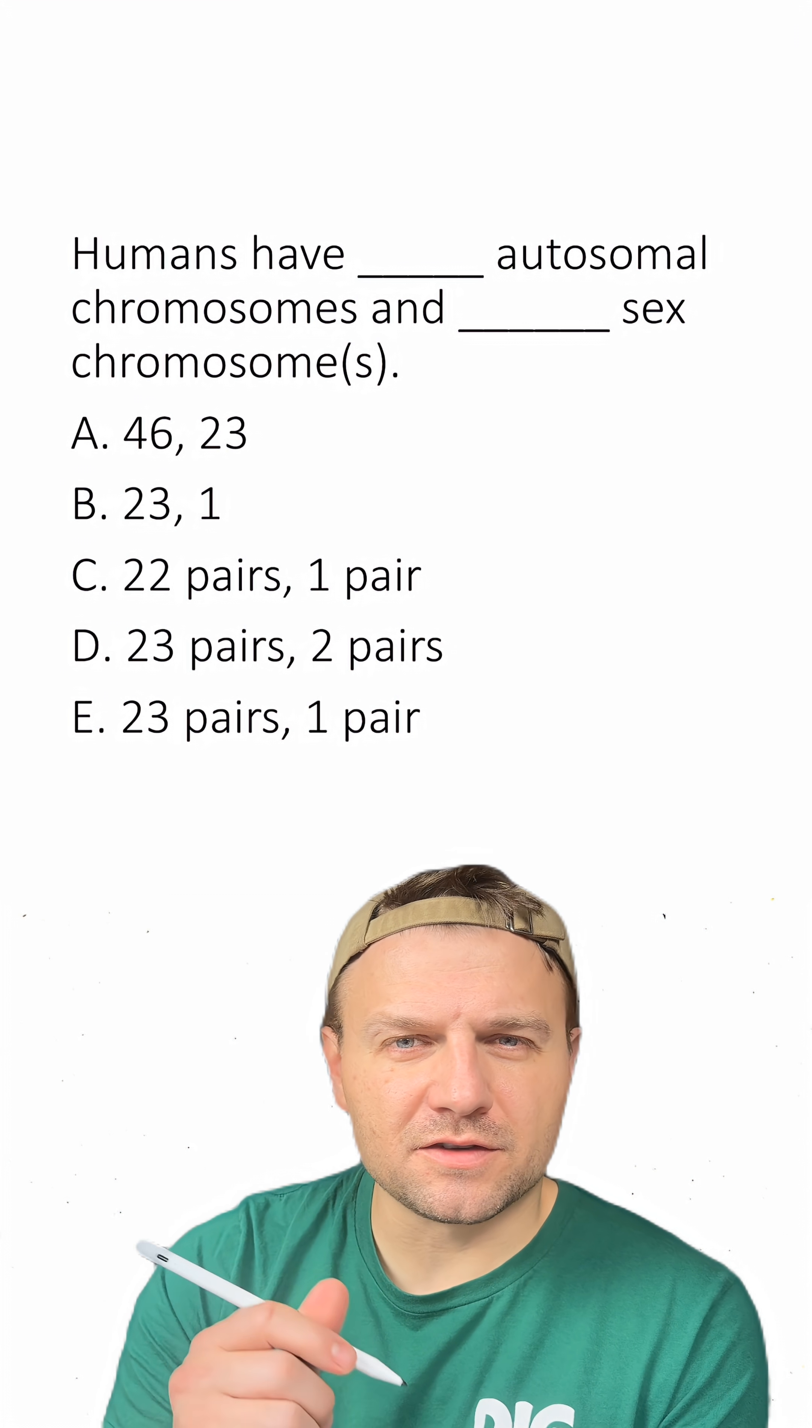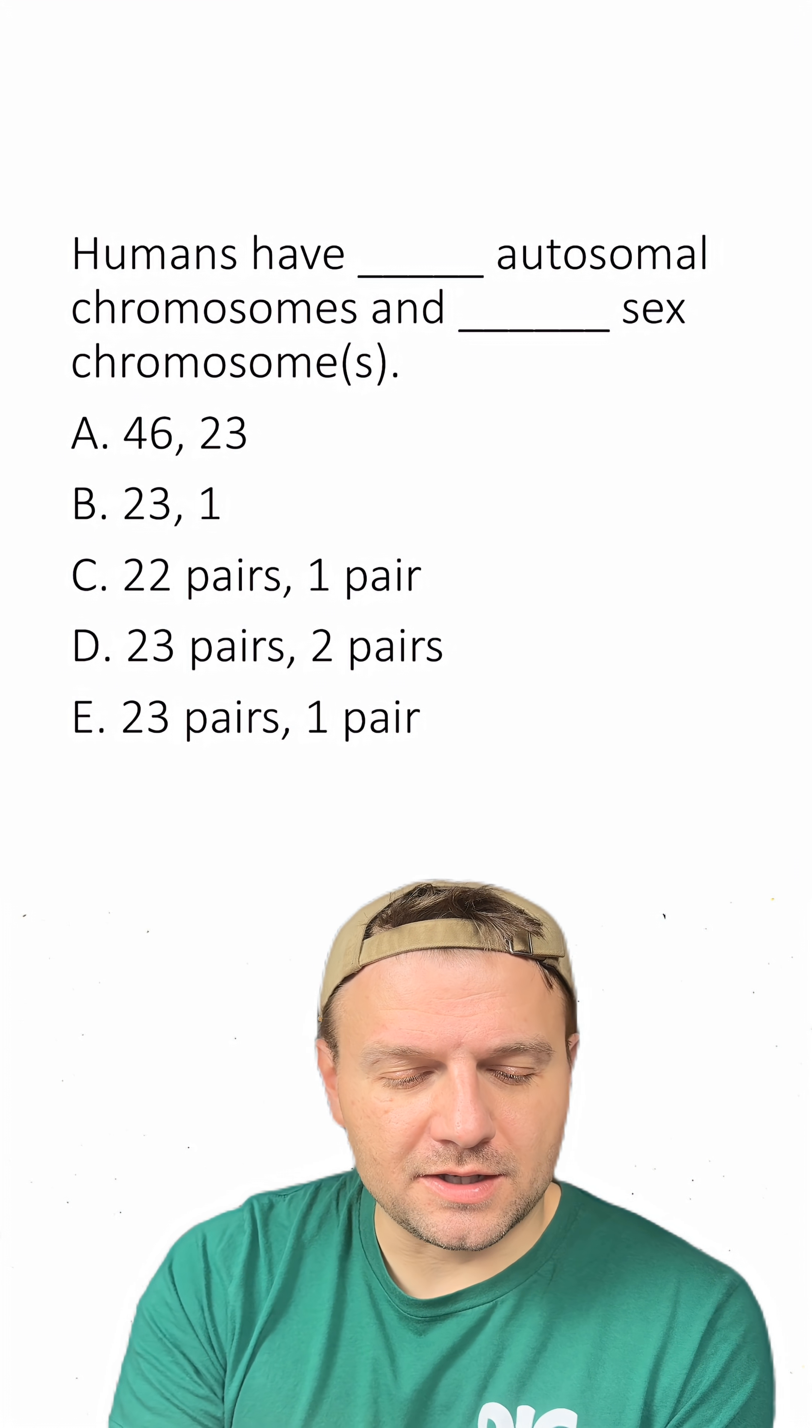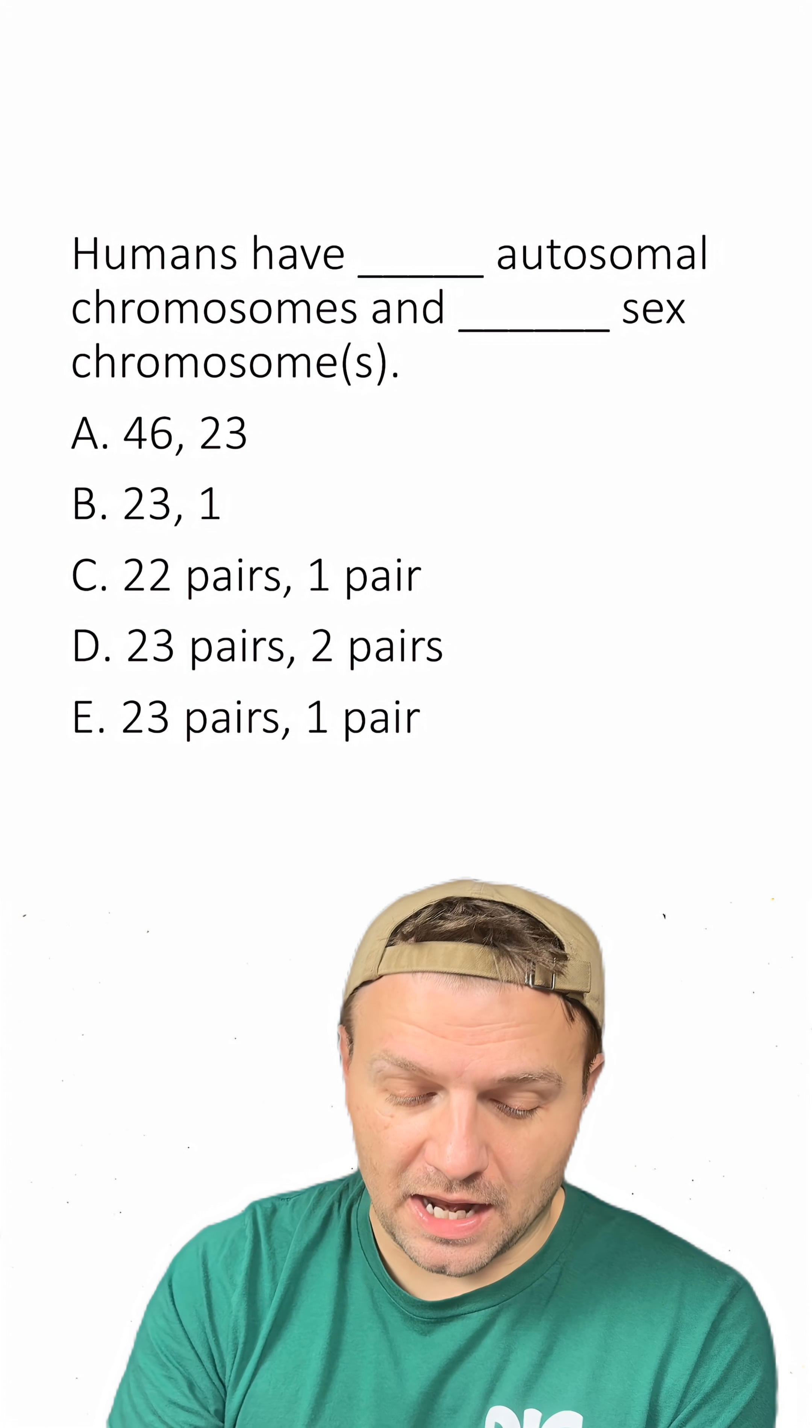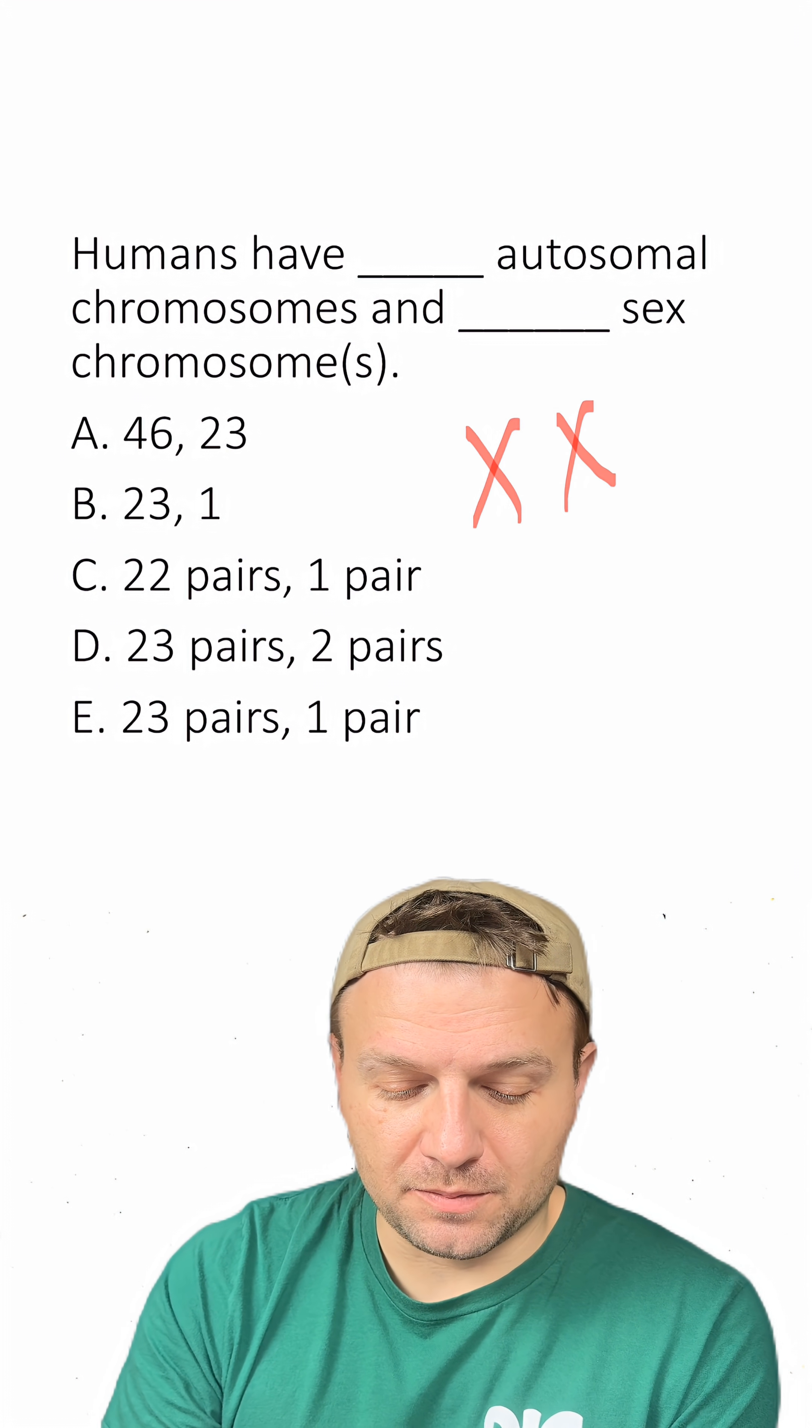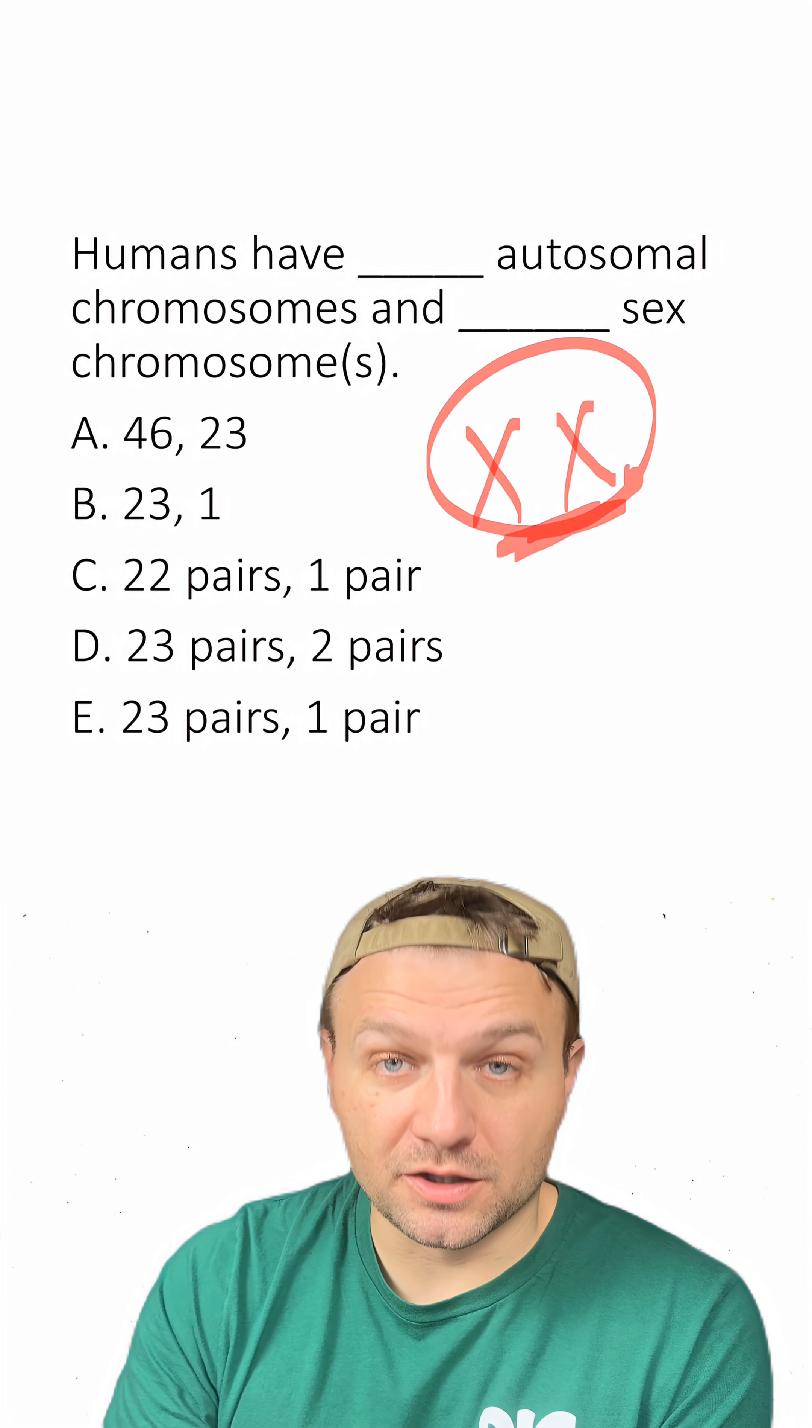Also remember that different species have different amounts of these autosomal and sex chromosomes. And the last thing to remember is that these chromosomes typically come in pairs. Especially for sexually reproducing organisms, they come in pairs of chromosomes known as homologous chromosomes.